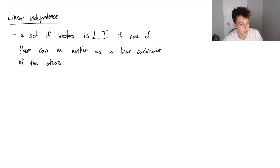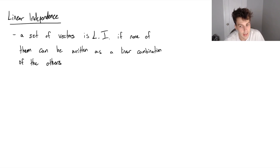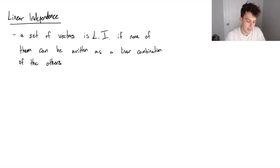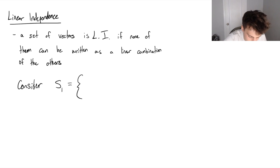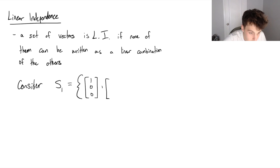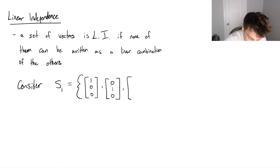I've written on the screen here just a reminder of what our definition of linear independence is. A set of vectors is linearly independent if none of them can be written as a linear combination of the others in the set. So let's take a look at a really easy example. Consider set S1, composed of three vectors in R3. One of them will be (1, 0, 0), the next one will be (0, 1, 0), and the last one is going to be (1, 2, 0).